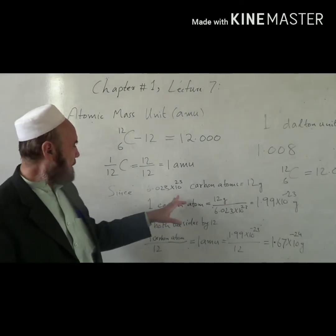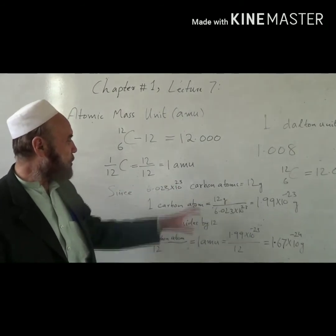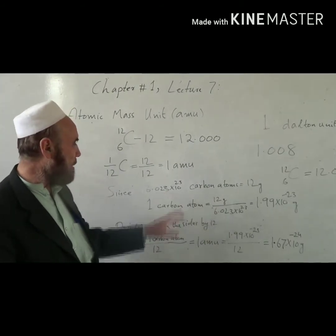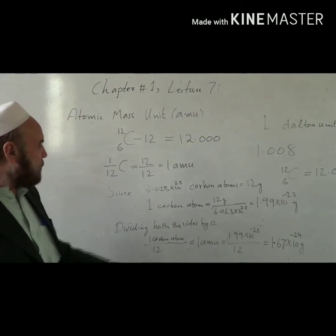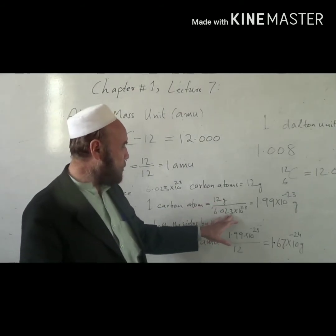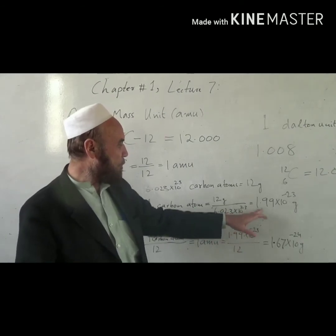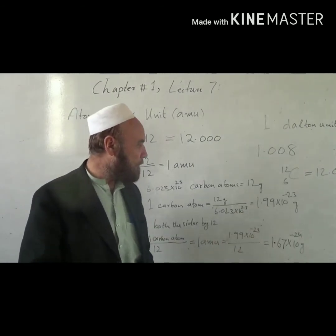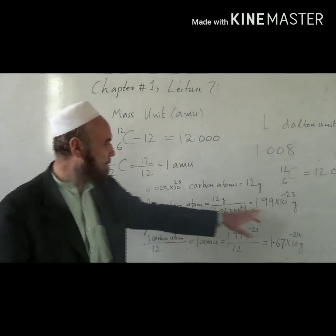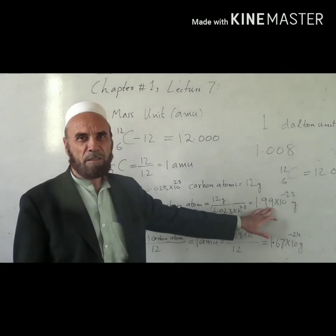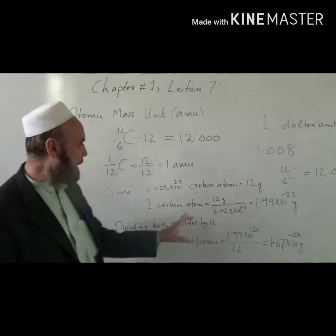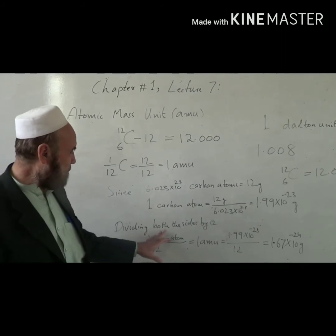Since 6.023 × 10²³ carbon atoms equals 12 grams — the mole concept, Avogadro's number — we can calculate the mass of one carbon atom: 12 g divided by 6.023 × 10²³, which equals 1.99 × 10⁻²³ grams. This is the mass of one carbon atom, not 1 AMU.